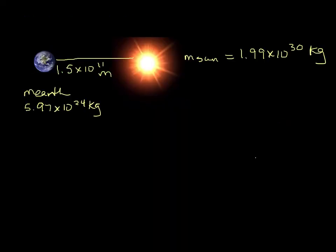So what if we wanted to find the gravitational force between the Earth and the Sun? The Earth and the Sun exert a force on each other — the Sun pulls the Earth in, and the Earth also pulls the Sun. Action, reaction. Those forces are equal and opposite, so we calculate it the same way.